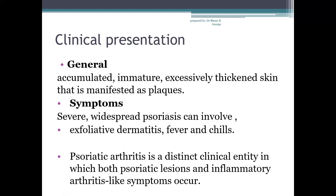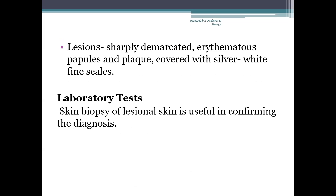In psoriatic arthritis, distal interphalangeal joints and adjacent nails are commonly involved. Knees, elbows, wrists and ankles are also involved. The lesions are characterized by sharply demarcated erythematous papules and plaques covered with silver-white fine scales.